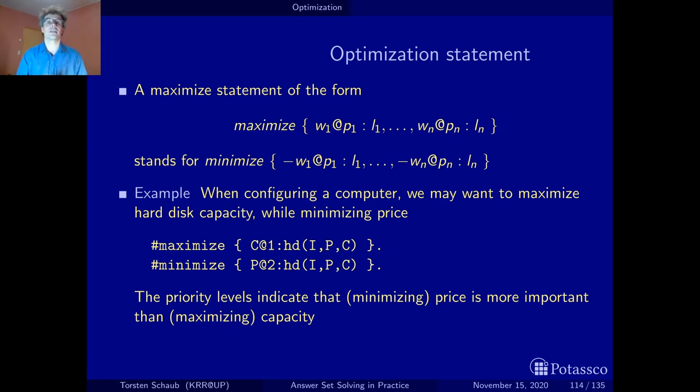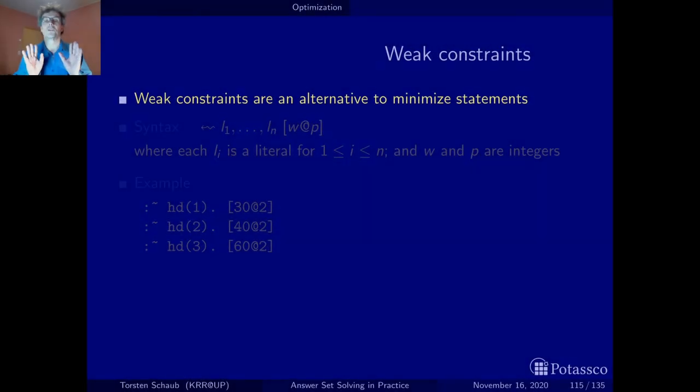In fact weak constraints are equivalent to minimization statements and it really depends on the application or your taste actually what you prefer. Let us just look at the same example with weak constraints. So again, weak constraints are an alternative means to express objective functions and whether you choose weak constraints or minimize statements it doesn't matter, it's up to your taste.